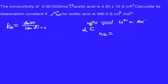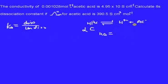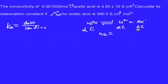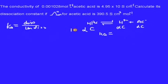For every molecule of acetic acid we get one H⁺ and one acetate ion. So if we take 100 molecules, then 10% has dissociated, giving us 10 H⁺ and 10 acetate ions. So 10% of C has been generated for H⁺ and the same for acetate. What we are left with is 90%, so one minus alpha gives us 90% of the concentration that has not dissociated.